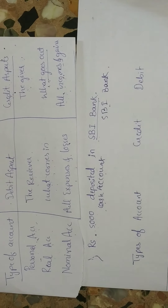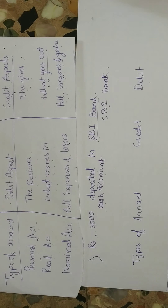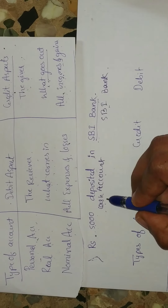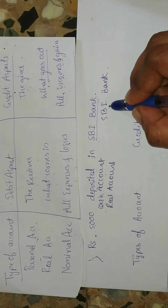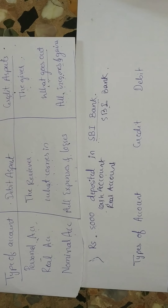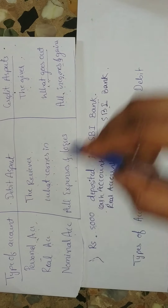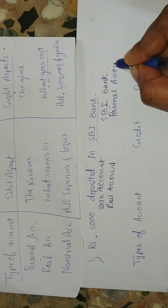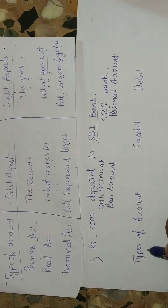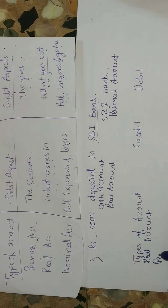Cash account always comes under real account — cash, buildings, assets, and goods all come under real account. SPI Bank — bank names and organization names come under personal account. So SPI Bank will come under personal account. Now I am going to write the accounts: real account and personal account.